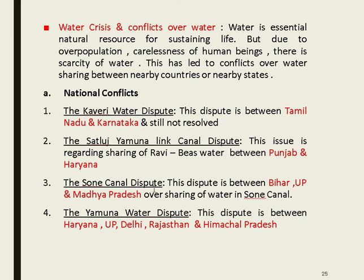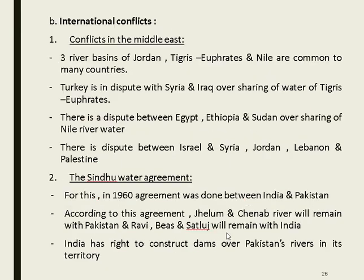Other national water disputes include the Sone canal dispute between Bihar, UP, and Madhya Pradesh, and the Yamuna water dispute between Haryana, UP, Delhi, Rajasthan, and Himachal Pradesh.